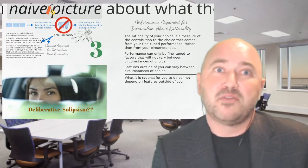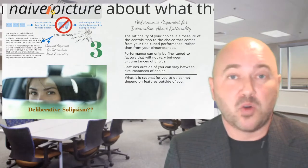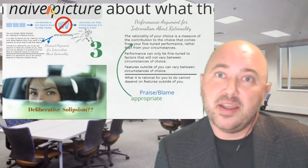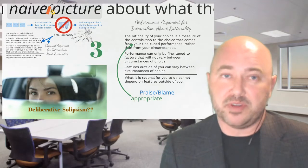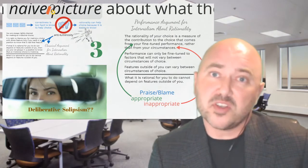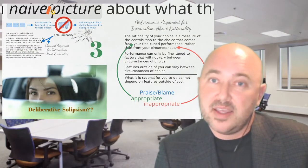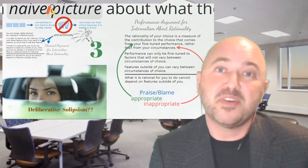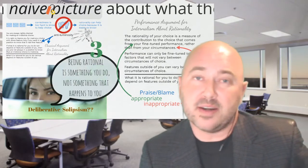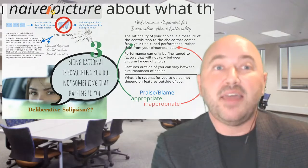Rationality is about what comes from you choosing well, as opposed to the luck of how things turn out. Performances can only be fine-tuned to factors that are not going to vary between circumstances of choice — otherwise you're not really fine-tuned for all possible circumstances. Good choosers are ones who could choose well in different kinds of circumstances. So features outside your head are going to vary between circumstances, and consequently what's rational for you can't depend on those features. This is a very different argument for internalism than the classical argument — it doesn't start from blame or praise, and yet we can still draw consequences: blame and praise are appropriate for things you contribute, not for features that are products of your environment. Being rational is something you do, not something that happens to you — and that's why blame and praise are appropriate.